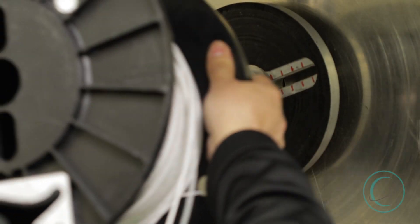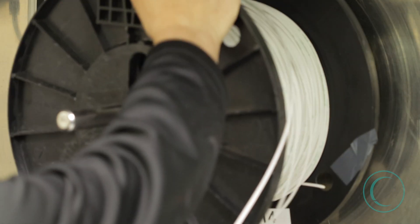The first step in our process is to add the spool of wire that we're going to be using into what's called a derailer.